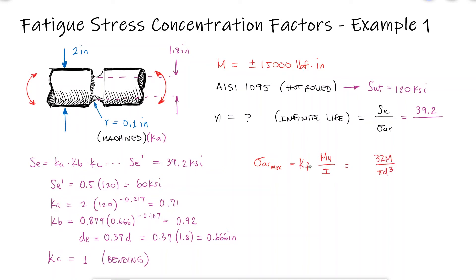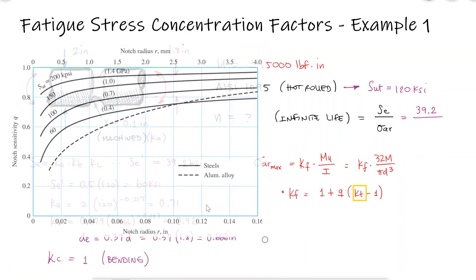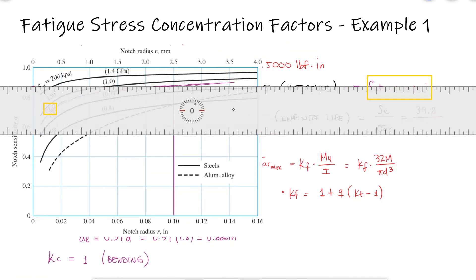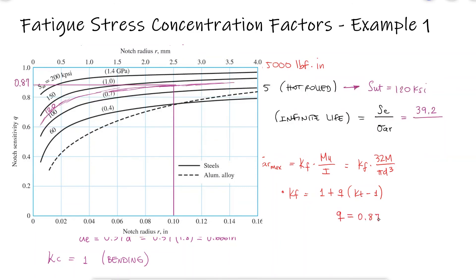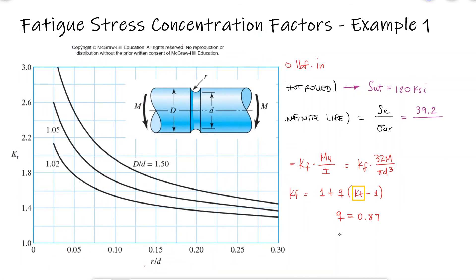We know that the fatigue stress concentration factor Kf will depend on the notch sensitivity Q and the static stress concentration factor Kt. The notch sensitivity factor depends on the ultimate strength and the notch radius. The static stress concentration Kt for a grooved round bar in bending will depend on the d over D ratio and the notch radius over d ratio, which yields a value of 2.1.